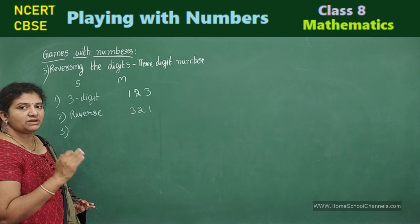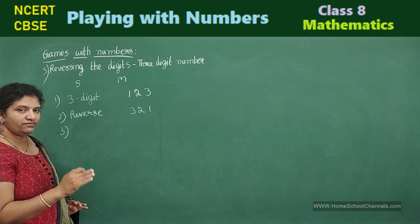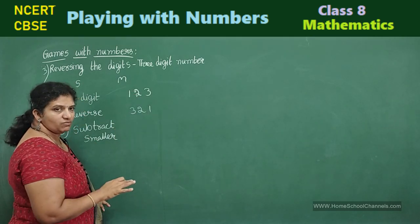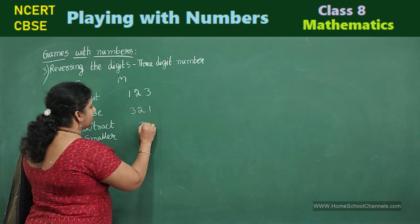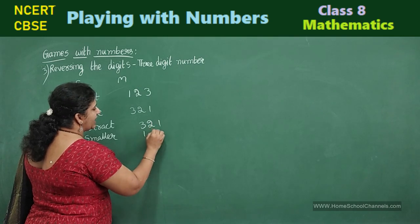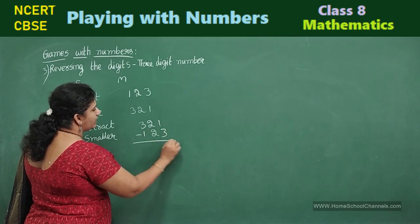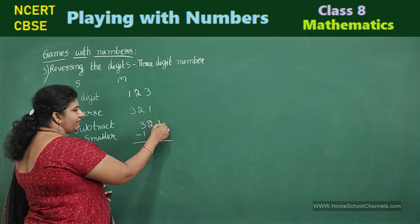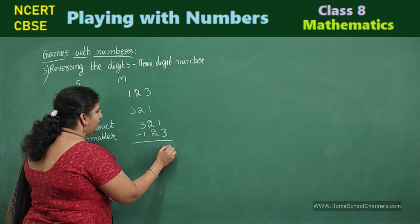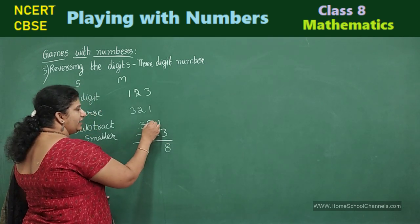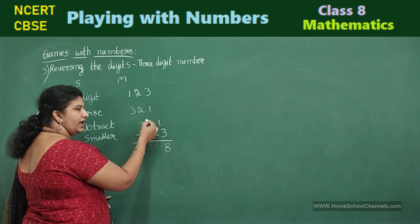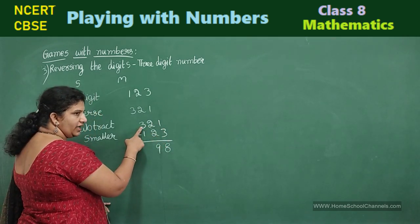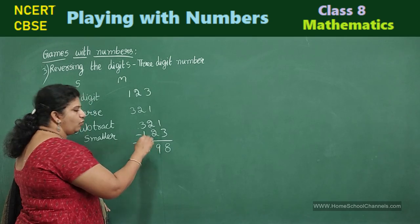Third step. What he says, subtract the smaller number from the bigger number. Meenakshi will do subtraction. Which three digit number is smaller? 123. So in 321, subtract 123. 1, you cannot take out 3. So take a borrow. 11 minus 3, it will be 8. And here you are left with 1. Again take a borrow. 11 minus 2 will be 9. And here you are left with 2, 2 minus 1, 1.